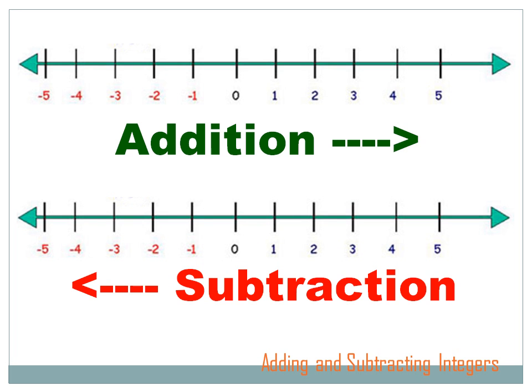We're going to talk about adding and subtracting integers, and I know you guys have done this for a long time, but we're going to focus on negative numbers and the impact of a negative number on addition and subtraction. One important thing to remember is when you consider a number line: when you're adding, or if it's a positive number, you move to the right. If you're subtracting, or it's a negative number, you move to the left.